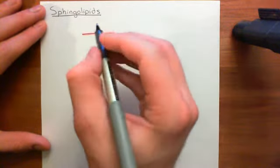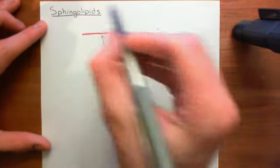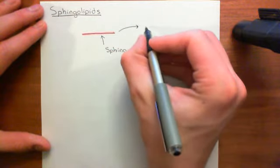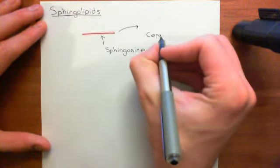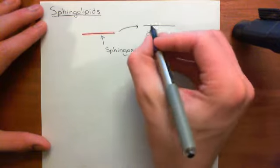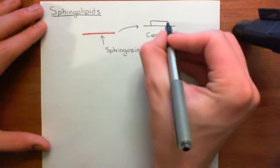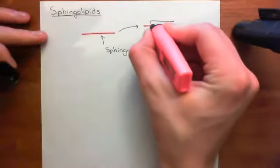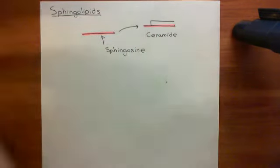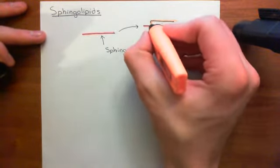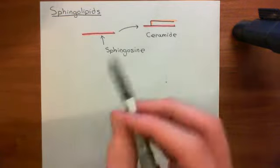To create a sphingolipid, you're going to start with a sphingosine molecule and firstly go from a sphingosine molecule to something called a ceramide molecule. To go from a sphingosine to a ceramide, you have to add in a long-chain carboxylic acid onto the sphingosine molecule. Here's the sphingosine molecule in red, and you are going to attach a long-chain carboxylic acid onto the amino group of the sphingosine molecule.